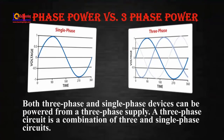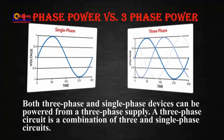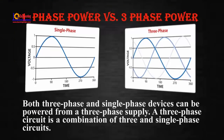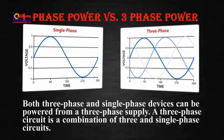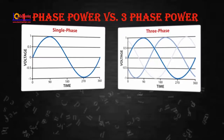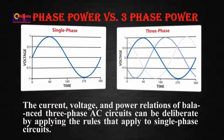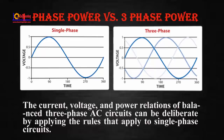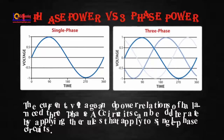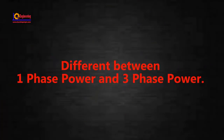Both three-phase and single-phase devices can be powered from a three-phase supply. A three-phase circuit is a combination of three and single-phase circuits. The current, voltage, and power relations of balanced three-phase AC circuits can be derived by applying the rules that apply to single-phase circuits. In this video, we will discuss the difference between single-phase power and three-phase power.